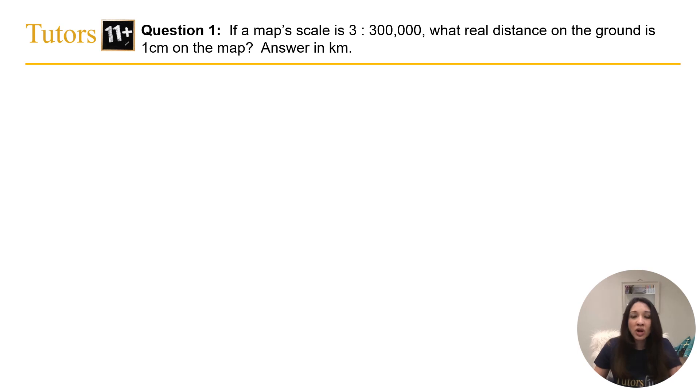Question 1. If a map scale is 3 to 300,000, what real distance on the ground is 1cm on the map? Answer in kilometers.